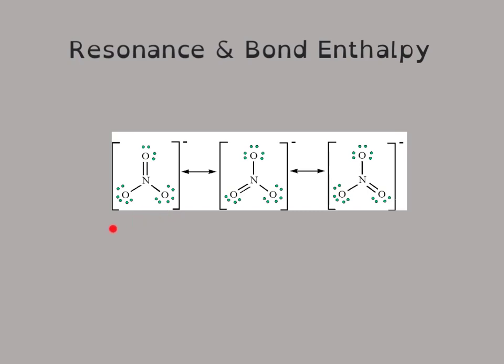In the first Lewis structure, you have NO3 with a minus one charge, and you can see that you have a lower left single bond, a lower right single bond, and then an upper double bond. It is just as likely to form the double bond on any of the other positions. In the central structure they have relocated the double bond to the left, and then to the right.